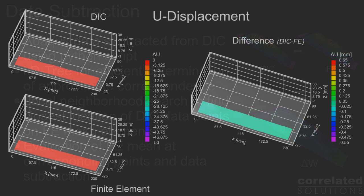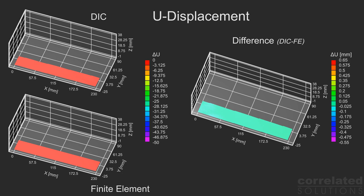The last step is visualization. All animations shown here were completed within the IRIS workspace of VIC-3D. Here, DIC data is on the top left, FE results on the bottom left, and the difference plot is on the right.